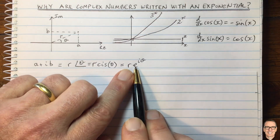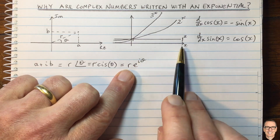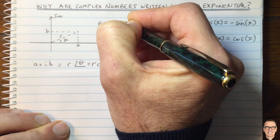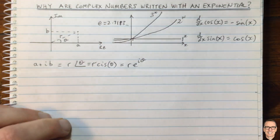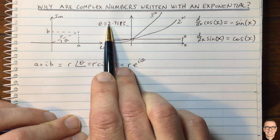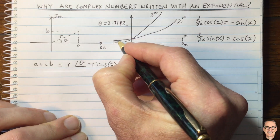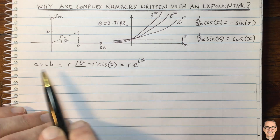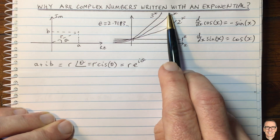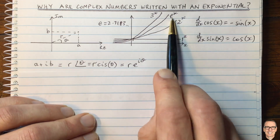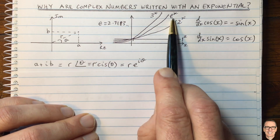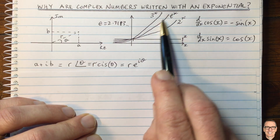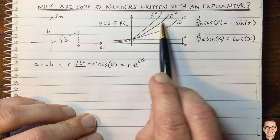What is so special about e to the power of x? E equals 2.7183, an infinitely long number — it's between 2 and 3, so it grows in between those curves. The special property is that the gradient of the function equals the value of the function itself.